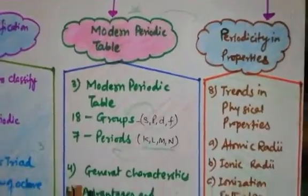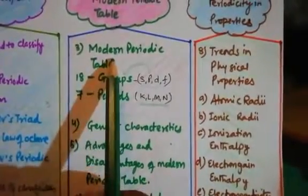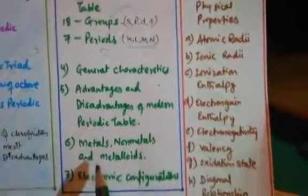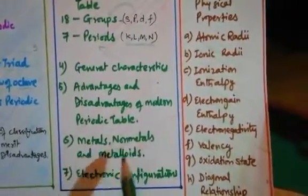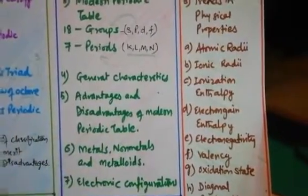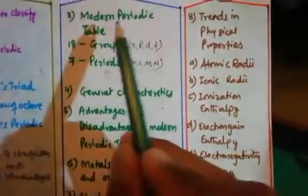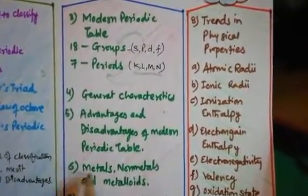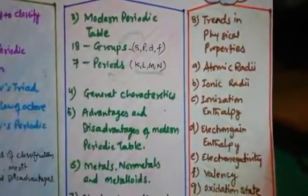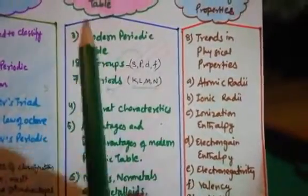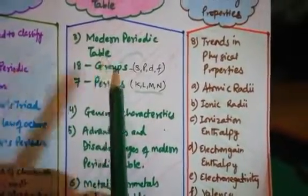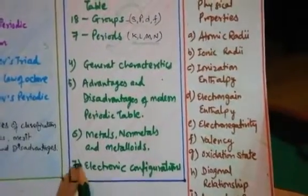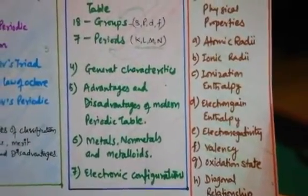You need to correlate this chapter with Chapter 2. We will discuss the general characteristics, advantages, and disadvantages of the modern periodic table. The classification of metals, non-metals, and metalloids is very beautifully done under the modern periodic table — this was also studied in Class 10, Chapter 3. The student who becomes the master of the modern periodic table will not face any problem in the future. The last topic is electronic configuration, which was the last topic of Unit 2 as well.